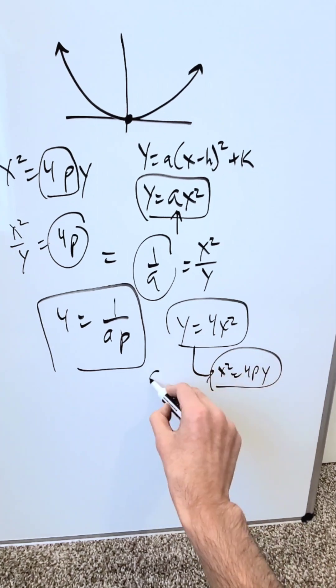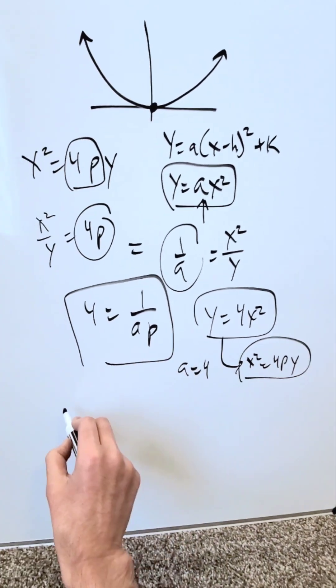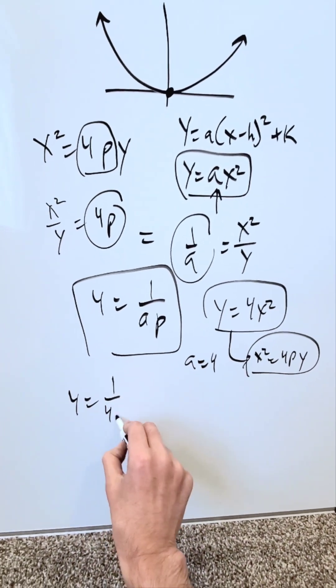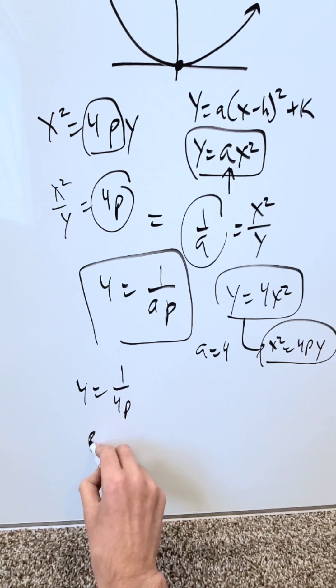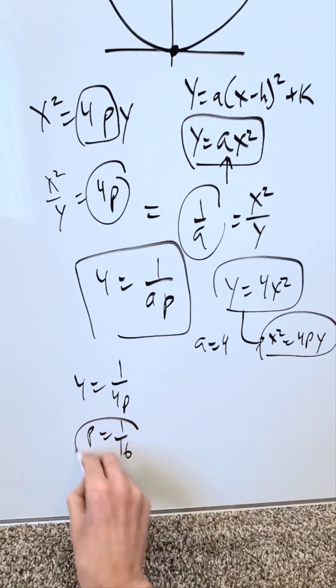By means of this, you know clearly here a equals 4. Bring it in here. 4p equals 1 over a becomes 4p equals 1 over 4. Play around with this. You'll have p equals 1 over 16.